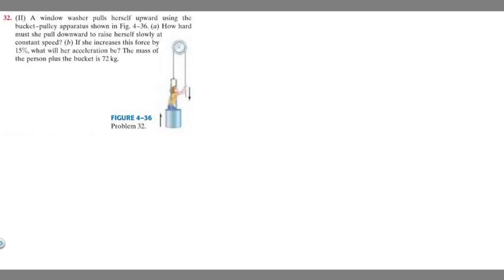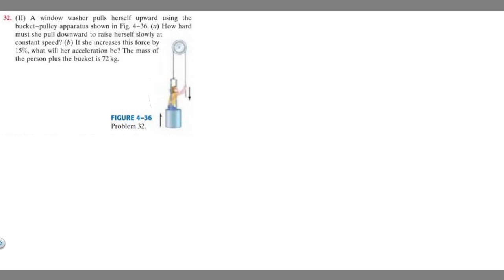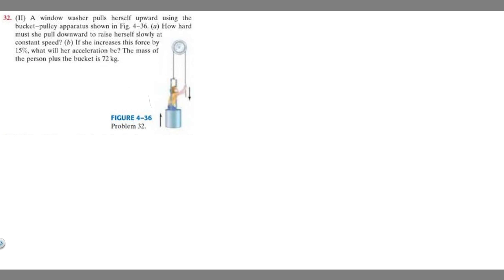In this problem, we're told a window washer pulls herself up using a bucket pulley apparatus shown in the figure. How hard must she pull downward to raise herself slowly at a constant speed? And if she increases this force by 15%, what will her acceleration be? The mass of the person plus the bucket is 72 kilograms.